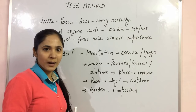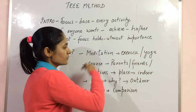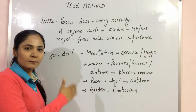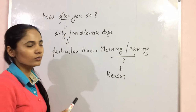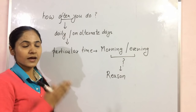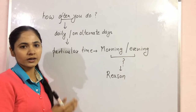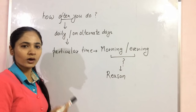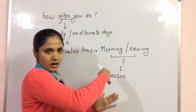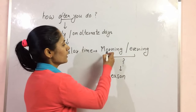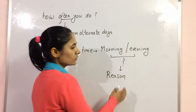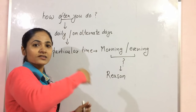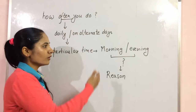You can make out a comparison. Now the next question is about how often you do it. You can say daily or on alternate days — choose one. If you do it daily, you can say there is a set time. If you do it in the morning or evening, you can further subdivide and give a reason — why in the morning or why in the evening. So we can state a reason and develop the idea further.